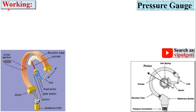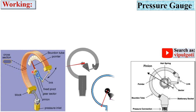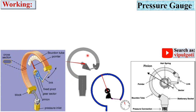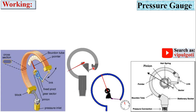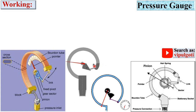Now, the very important part is the working of the Bourdon tube pressure gauge. Here you can see the cross section of the Bourdon tube is oval or elliptical in shape. This is the animation of the Bourdon tube pressure gauge. Here you can see the pointer will deflect according to the movement of this Bourdon tube.